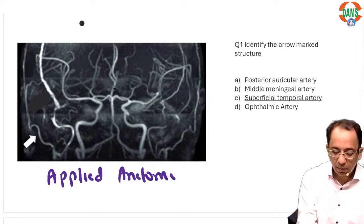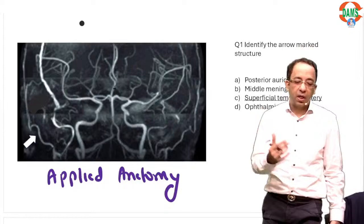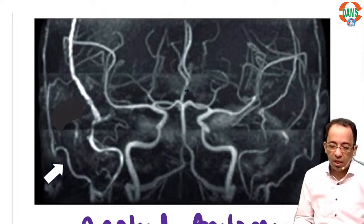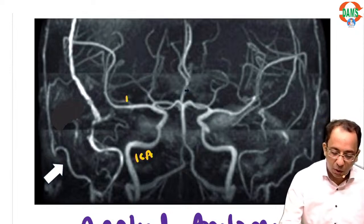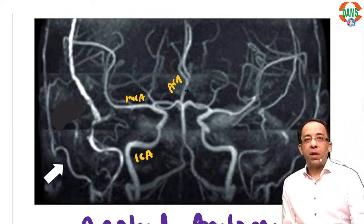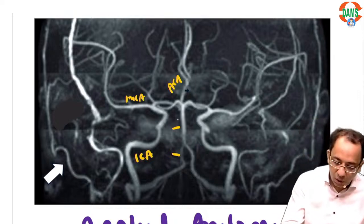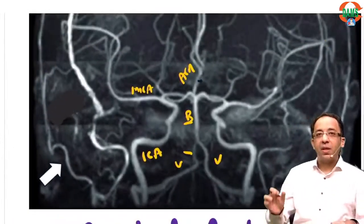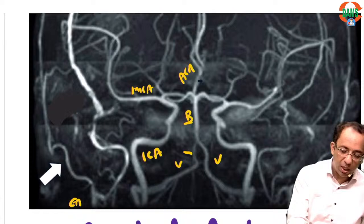The most important pattern in INICT is applied anatomy — they ask an anatomy question but the image will be a radiological or clinical image. This is an MR angiography image showing the internal carotid artery dividing into MCA and ACA. You can see the vertebral artery, the basilar artery — the major parts of the intracranial circulation. But INICT questions always have a twist: this time they are showing the external carotid artery.